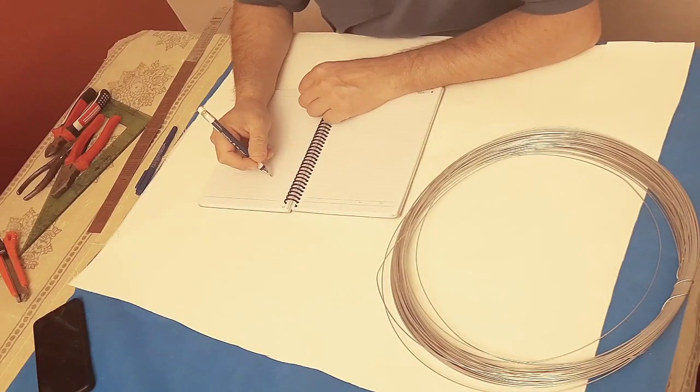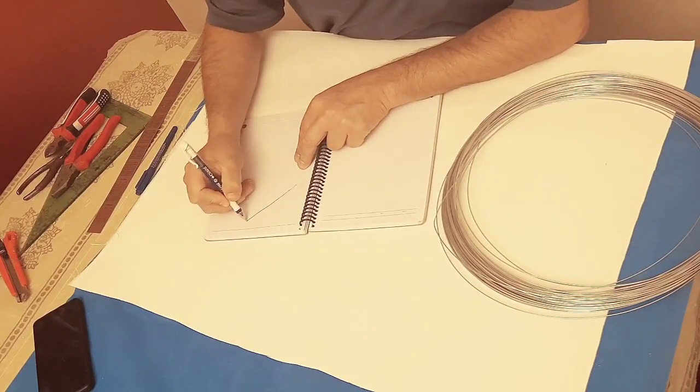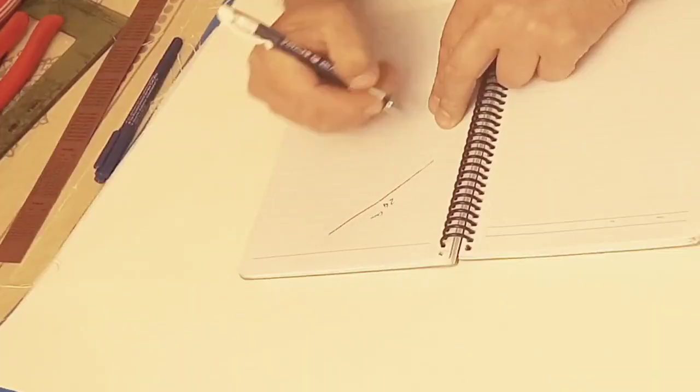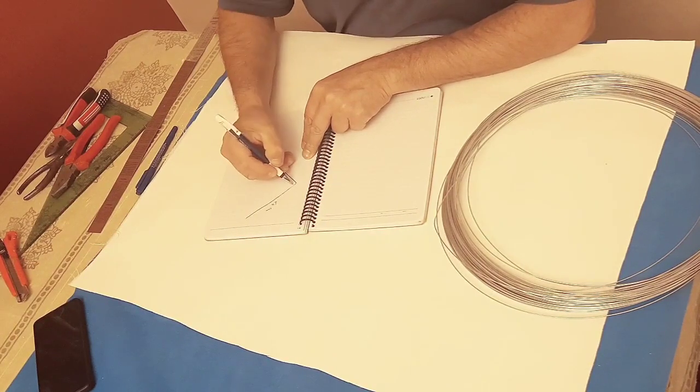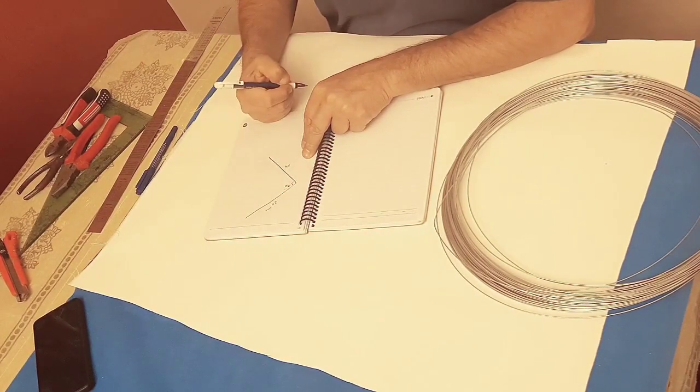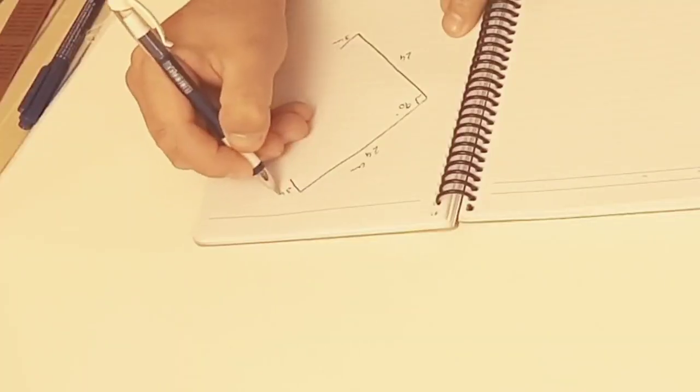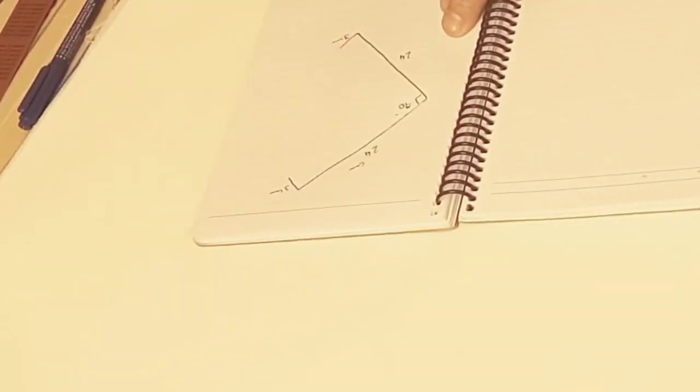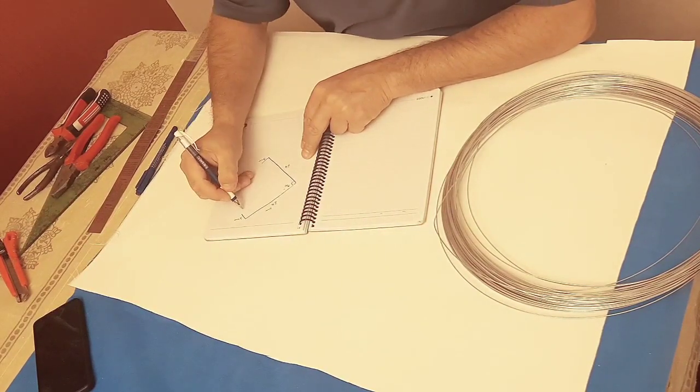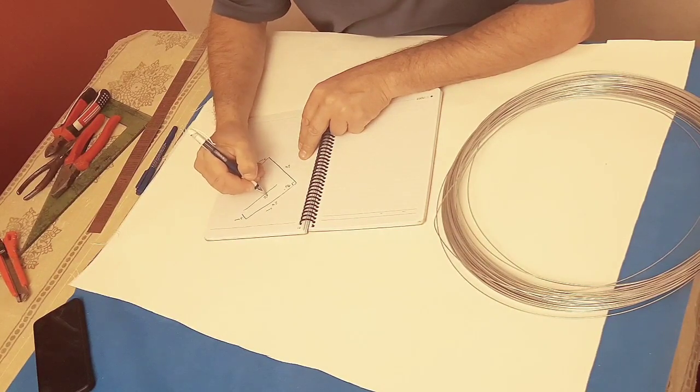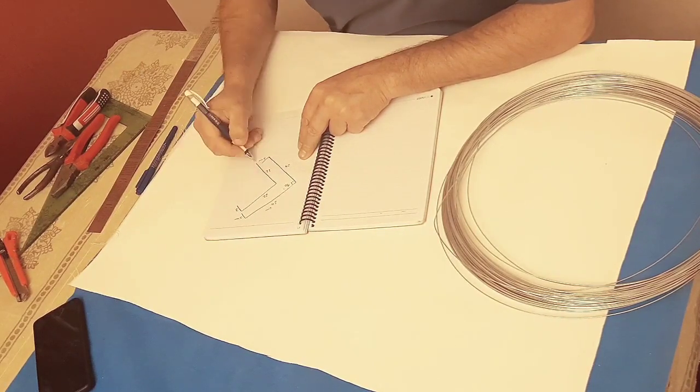For this purpose we need to cut the wire in different dimensions. For example, I want to start with 24cm by 24cm. We have a 90-degree angle here, and we should make 3cm and 3cm bends here to make a hinge to connect to the next part. The next part will be 22 by 22, but again 3 and 3.